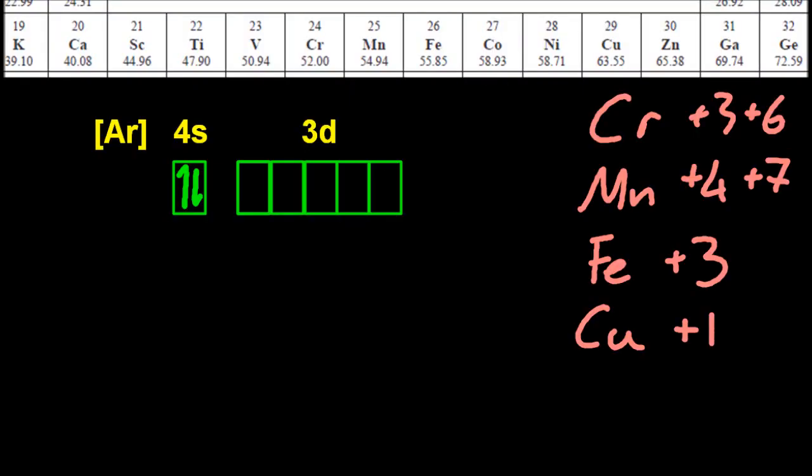There's some stuff coming up you don't need to know, and I'll be very clear about it. Chromium, that is argon 4S1, 3D5. How the plus 3 oxidation number comes about, you don't need to know. You just need to know plus 3 is possible. Plus 6, you do need to know how that comes about. It loses those 6 electrons. These orbitals are now empty and empty-stable. Remember, empty, half-empty and full orbitals are stable.